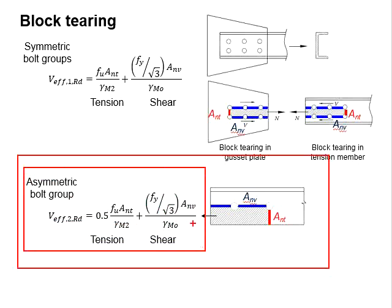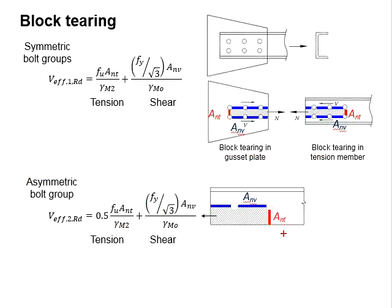Based on this slide here, the formulas for the block tearing is given here. As the tearing of the blocks is asymmetrical, there will be a factor of 0.5 in front of the calculations of the tensile resistance of the tensile plane.